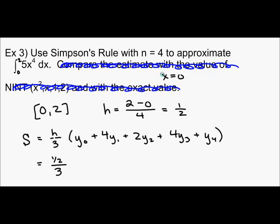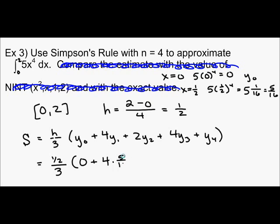So when X is zero, I'm going to have five times zero to the fourth is zero. So this is Y sub zero. Plus four times, so add a half to this. So X is one half. So we have five times one half to the fourth, which is five times one over 16. So we have five sixteenths. So four times five sixteenths plus two times. So next X is one. So we have five times one to the fourth, which equals five. So two times five plus four times.